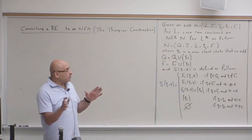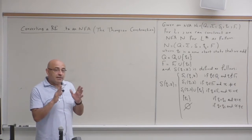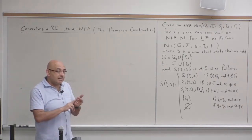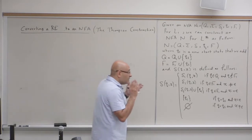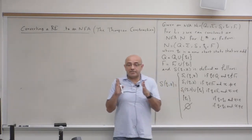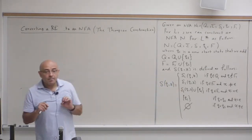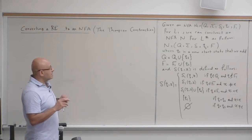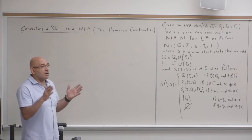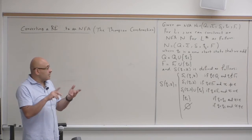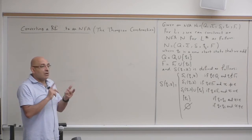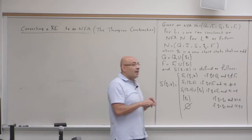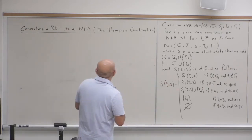So given what we have studied for constructing NFAs for the union, the concatenation, and the star — and since the regular expression consists of symbols related by one of these, or a combination of these regular operations: union, concatenation, star — we can easily construct, in a straightforward manner, an NFA for every regular expression.